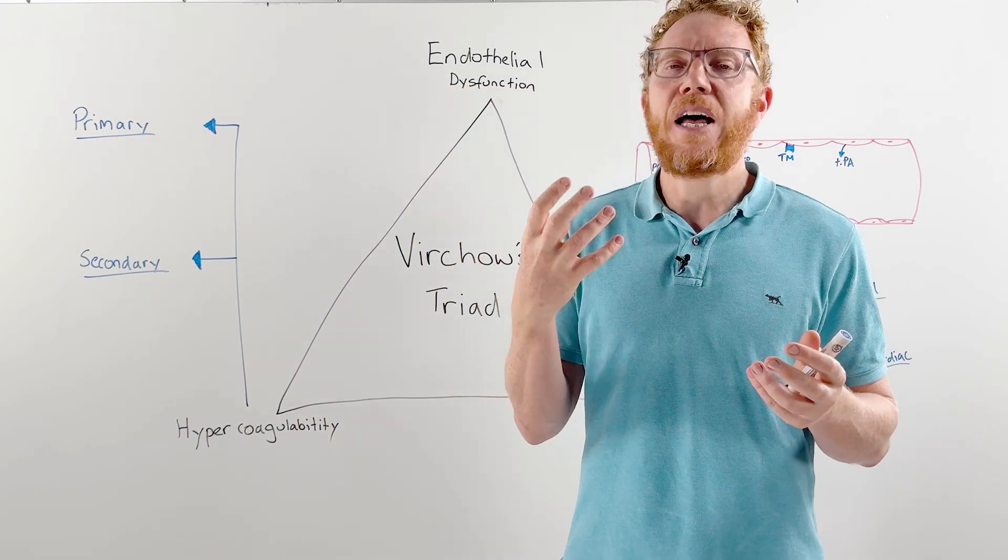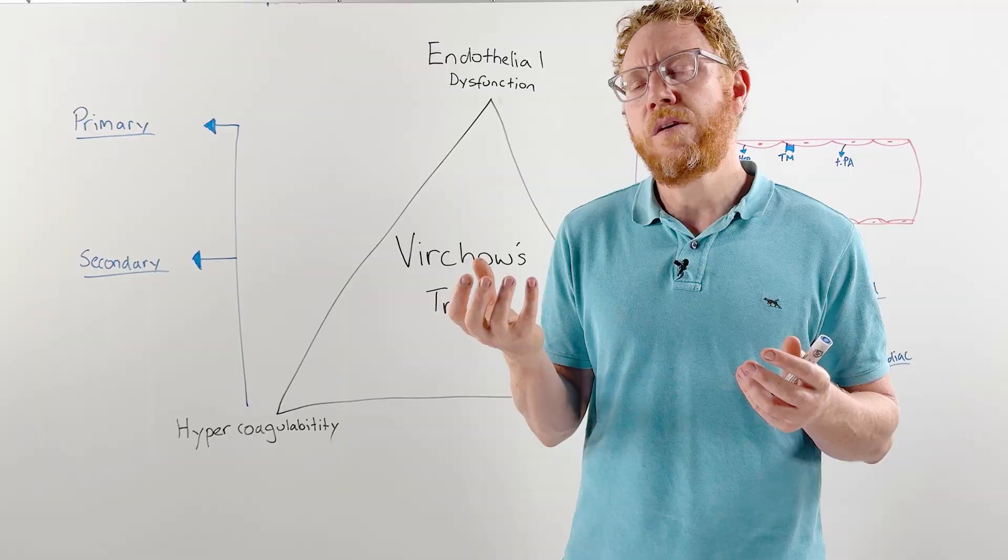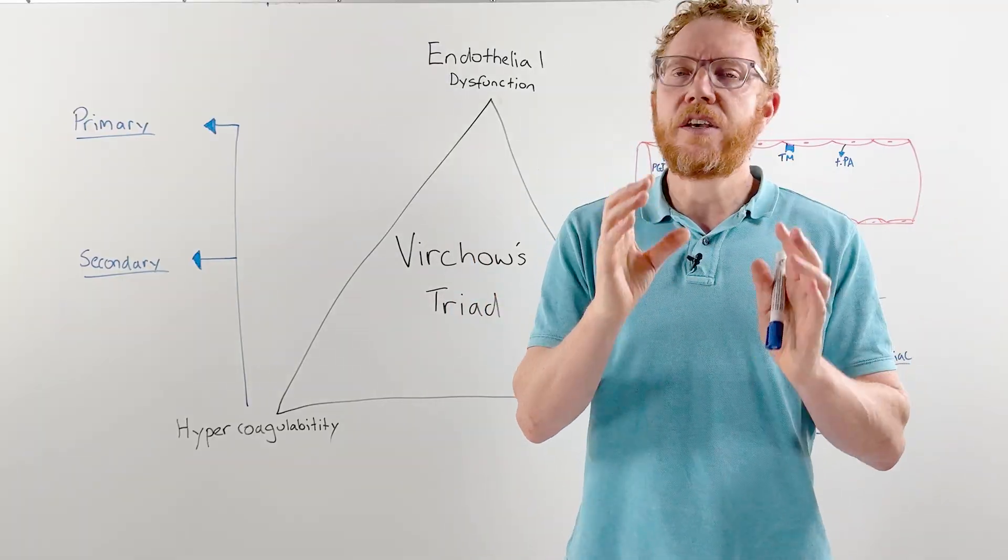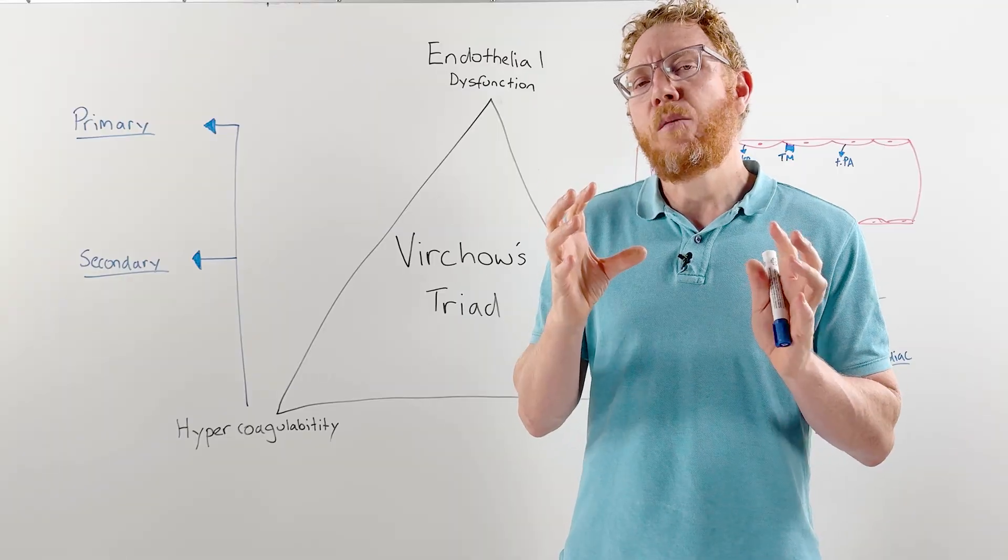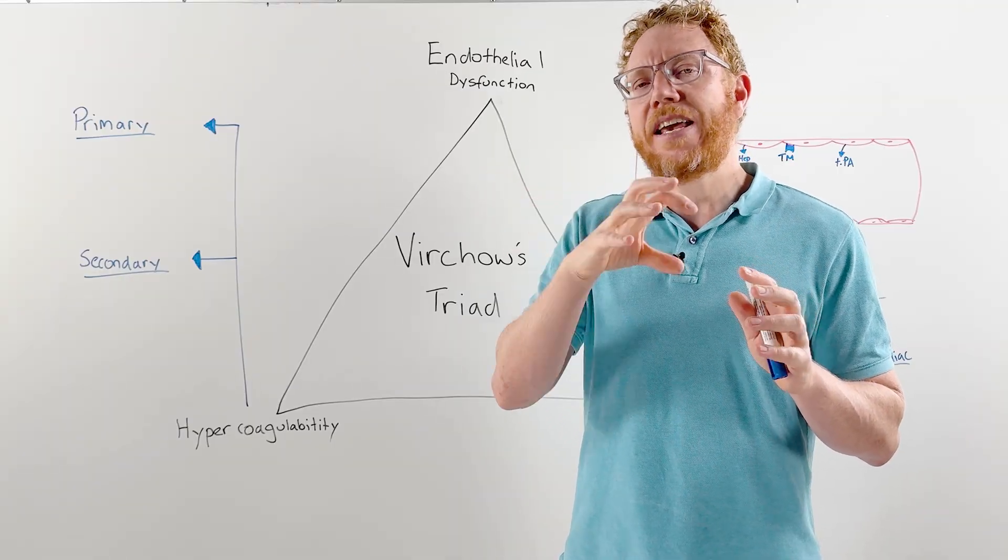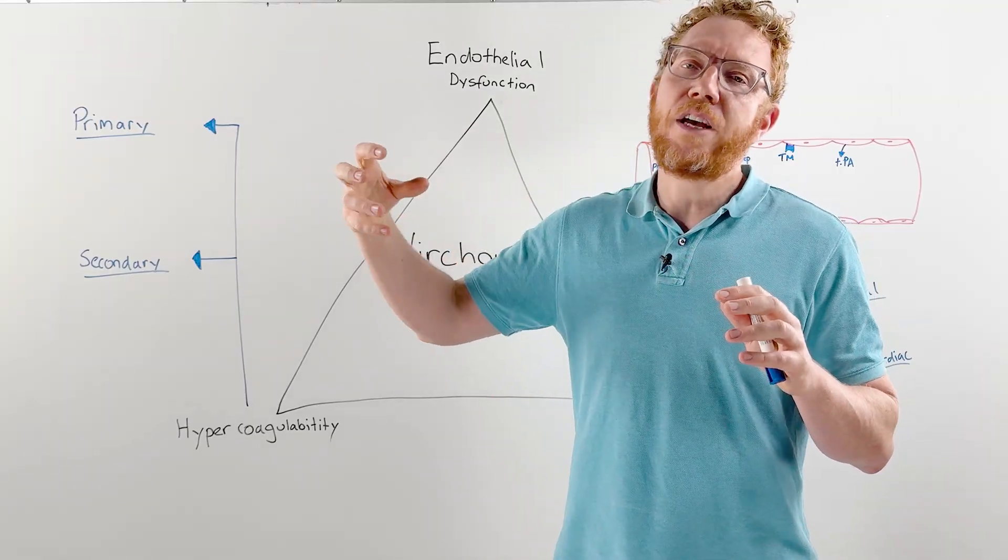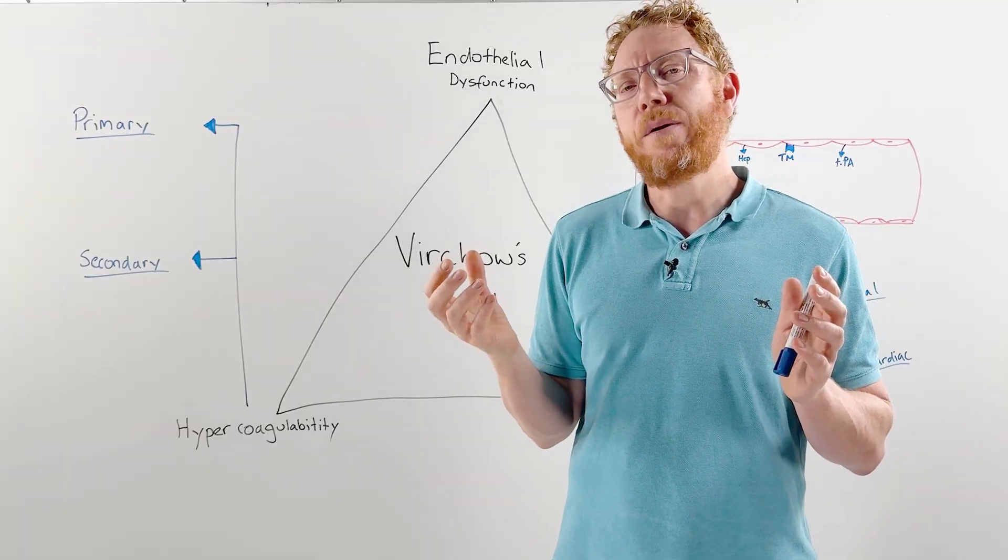A thrombus is a blood clot that forms within a blood vessel—in the arteries, capillaries, veins, or even in the heart itself. When this thrombus breaks off, it moves in the direction of blood flow and is then called an emboli.